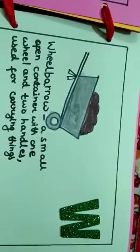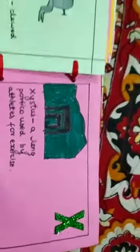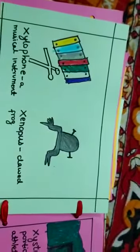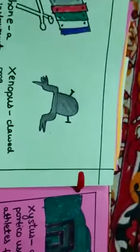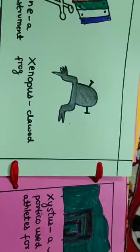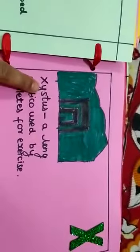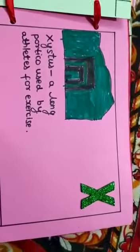Our next alphabet is X. The first word from X is xylophone, that is a musical instrument. The second is Xenopus, that is a clawed frog. And the third is exerciser, that is a long particle used by athletes for exercise.